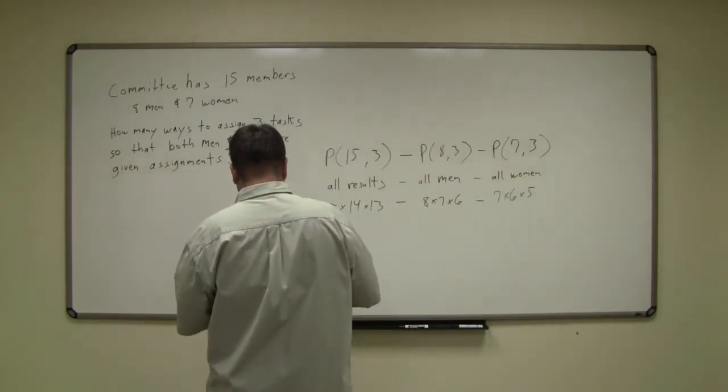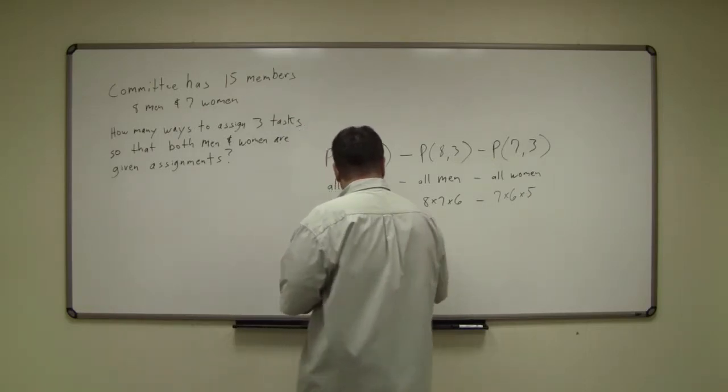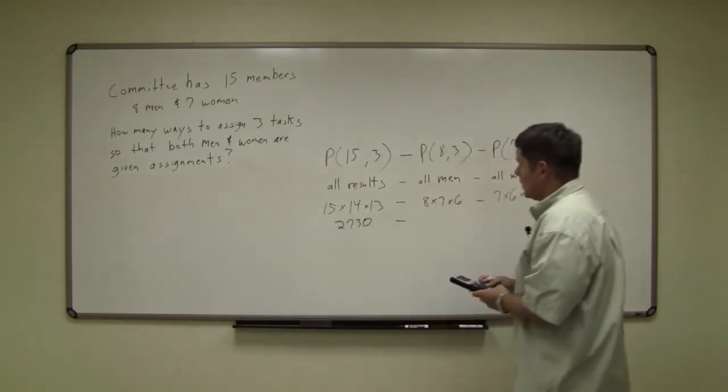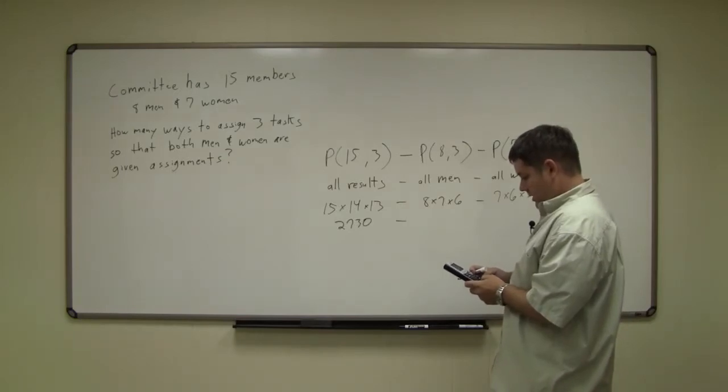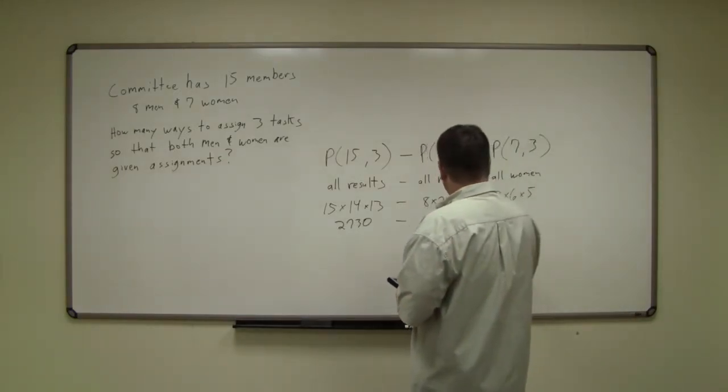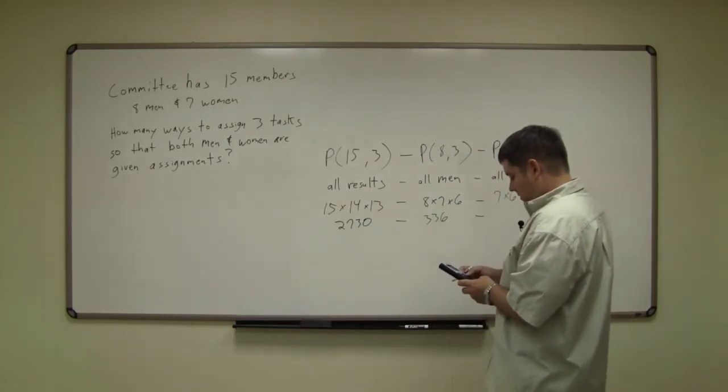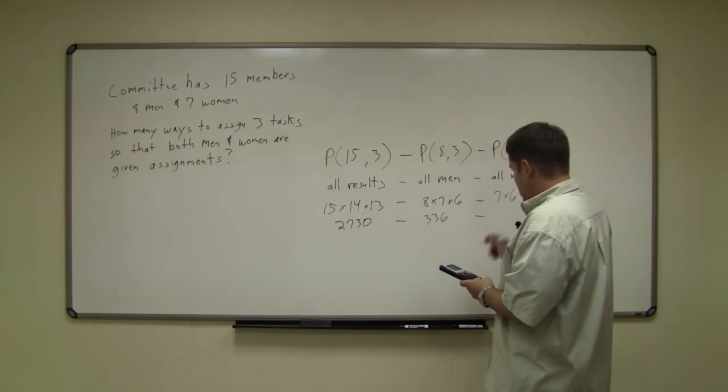So 15 times 14 times 13 gives us 2730. Then 8 times 7 times 6 is 336. And 7 times 6 times 5 is 210.